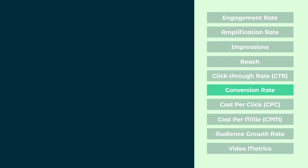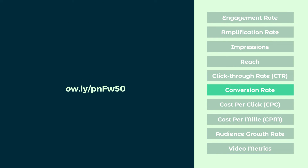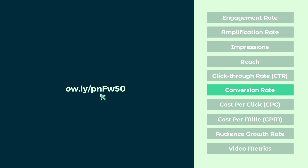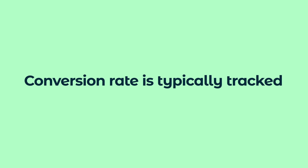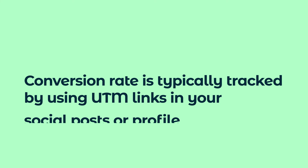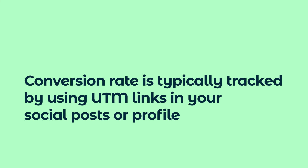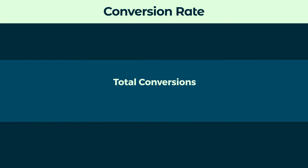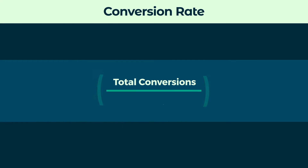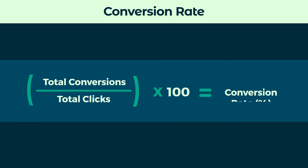Similarly, conversion rate measures how often someone clicked a link on your socials, and that led to a subscription, a download, a sale, or anything else that adds value to your brand. Conversion rate is typically tracked by using UTM links in your social posts or profile. Calculate this by dividing the number of conversions you received against the number of clicks you received on your links.